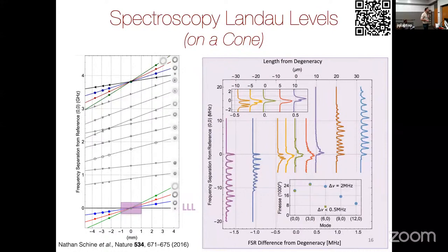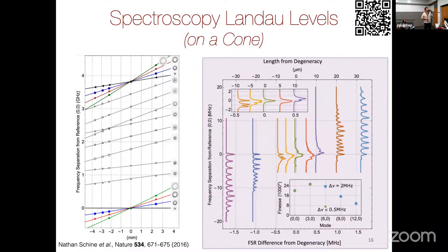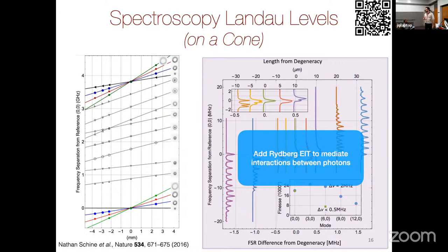I don't want to talk too much about the Laughlin state piece of it, but I do think it's worth talking about what collisions look like in this kind of model. We add collisions between our photons by having the photons talk to atoms using a Rydberg EIT technique — the kind of idea that Trey also uses.